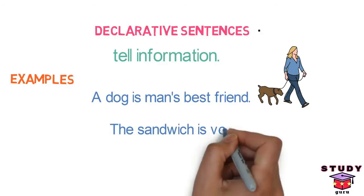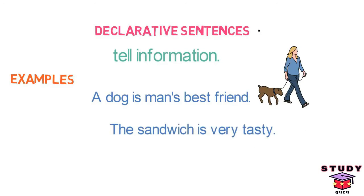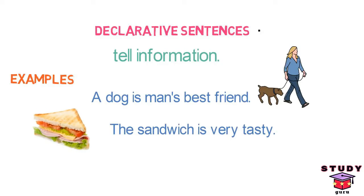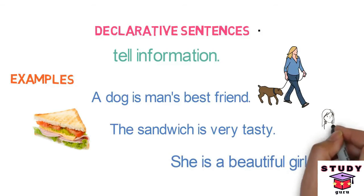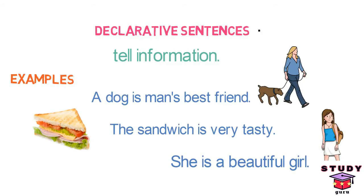'The sandwich is very tasty.' Here, we are telling information about the taste of the sandwich. 'She is a beautiful girl.' Here, we are informing about the beauty of a girl. In each case, all of them end with a period. So, declarative sentences just state facts.